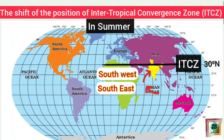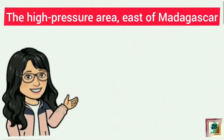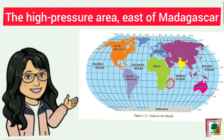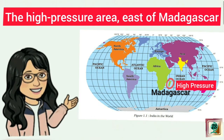The third factor is the high pressure area east of Madagascar. Madagascar is an island located off the southern coast of Africa, approximately at 20 degree south over the Indian Ocean. In the summer season, a high pressure area develops east of Madagascar, whereas low pressure is experienced over the Indian landmass. As a result, the winds blow from the high pressure area east of Madagascar to the low pressure area over the Indian landmass.